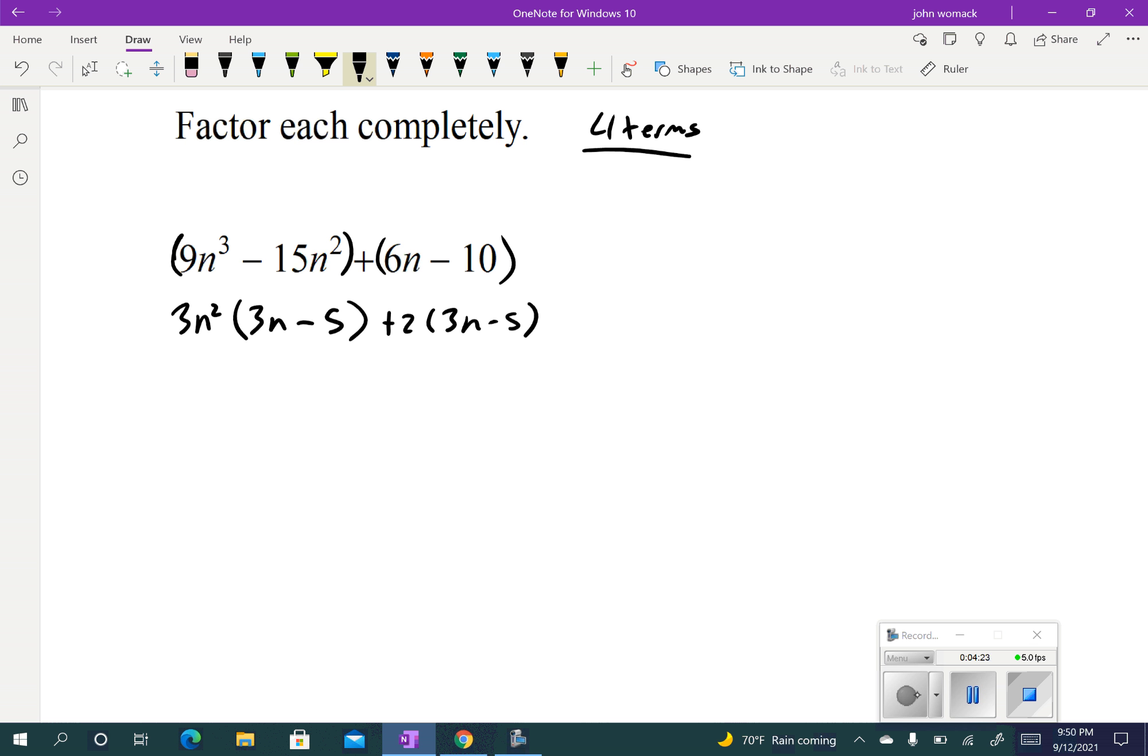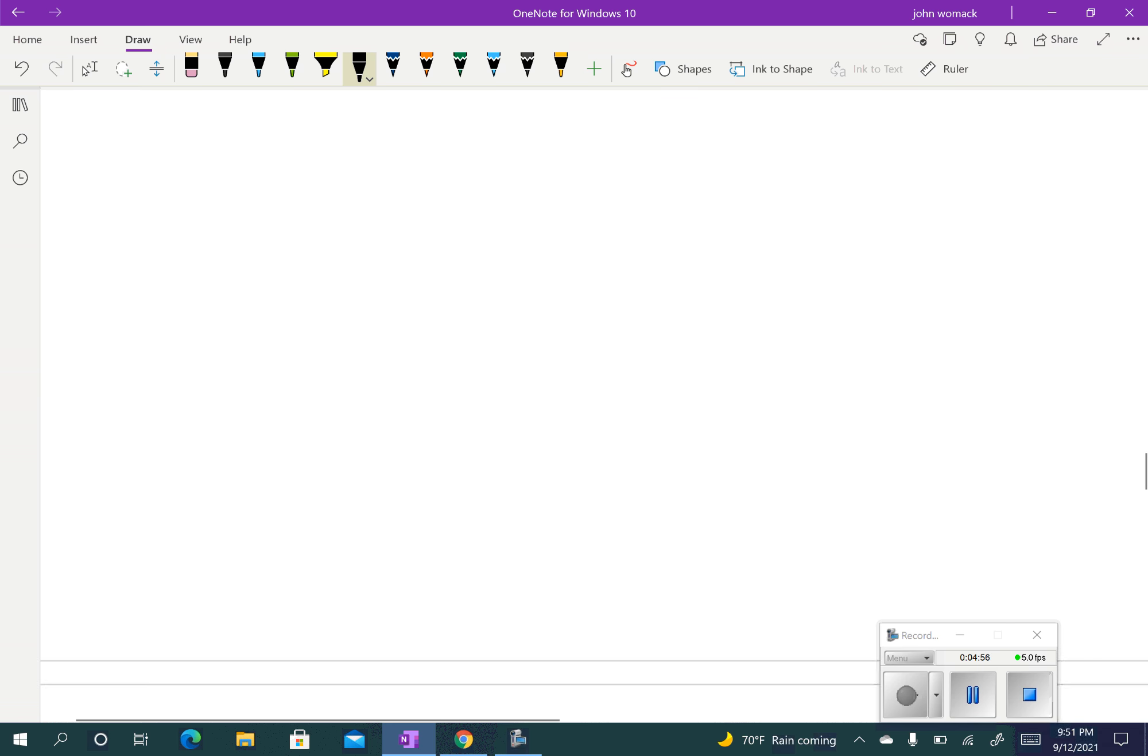What you might have noticed on this one and the last one is for this to work, these parentheses right here, the 3n minus 5, has to be the same. If it's not the same, then it won't work. But it is, so it does work. So we're going to take the 3n minus 5 and put it out in front. And then once we take those out, that leaves me with 3n squared plus 2. So it's 3n minus 5 times 3n squared plus 2, and there's my factored form. I want you guys to try one. Go ahead and write it down. Give it a try. Pause the video while you're doing that, and then come back.